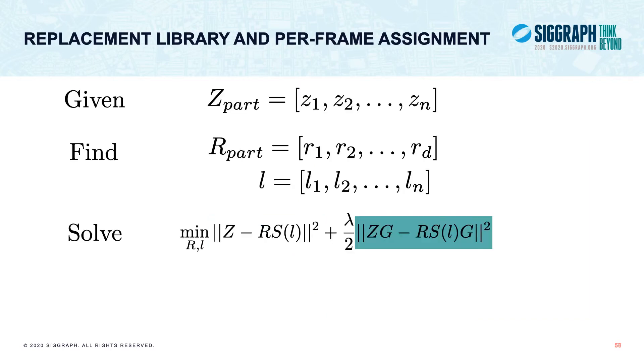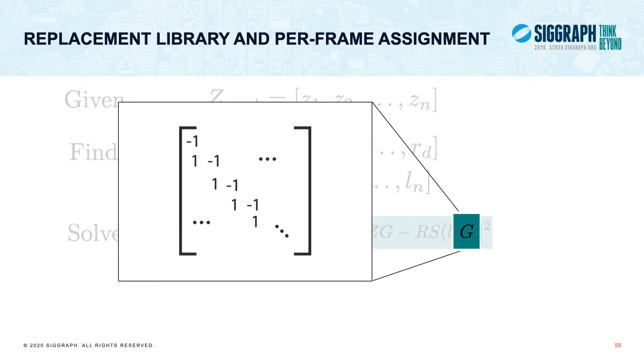The second term is a velocity term. This term is very important because it tries to make sure that the difference between meshes in two consecutive frames is preserved as much as possible. Matrix G is a sparse matrix containing minus ones along the diagonal and ones below the diagonal. Multiplying by G computes the temporal difference between every consecutive frame in both the input animation and our stop-motion approximation.